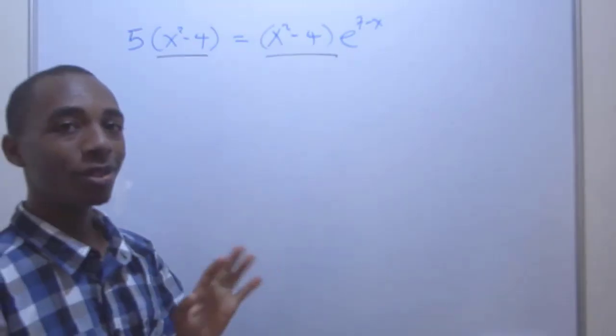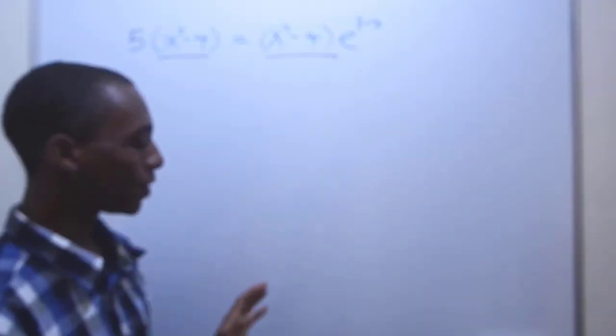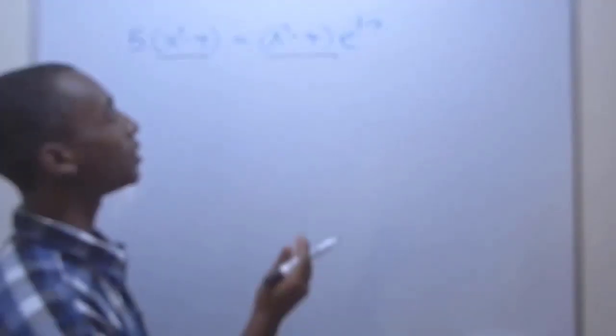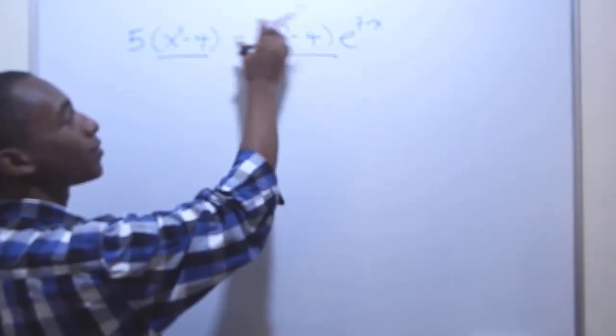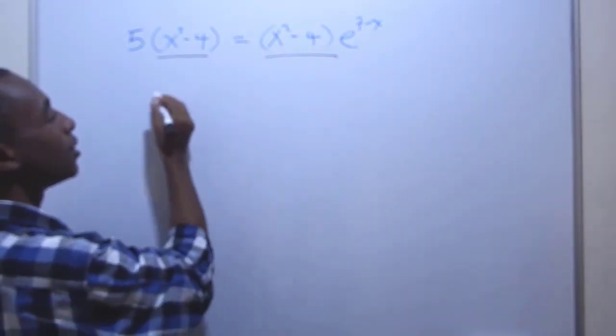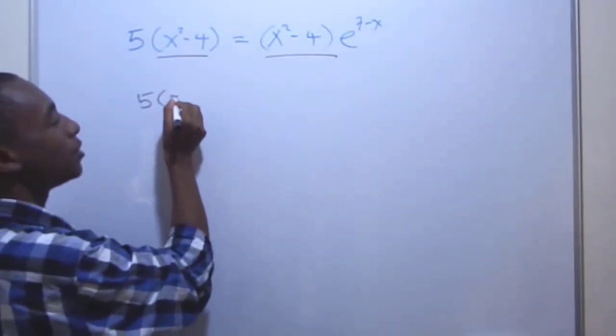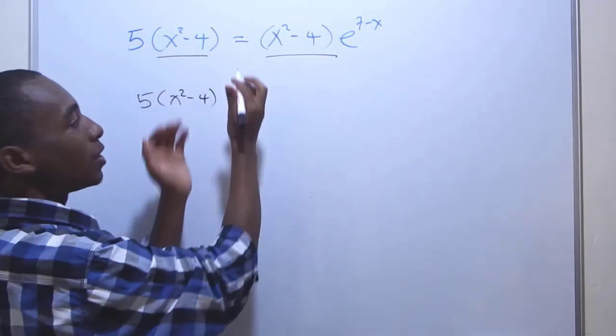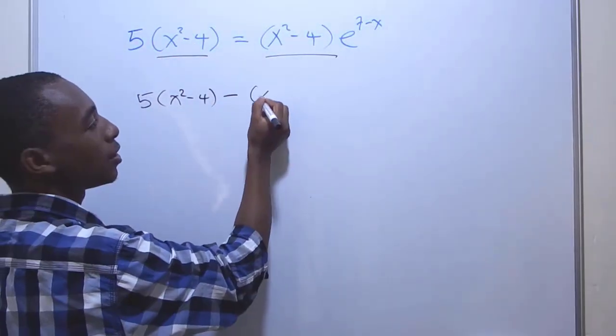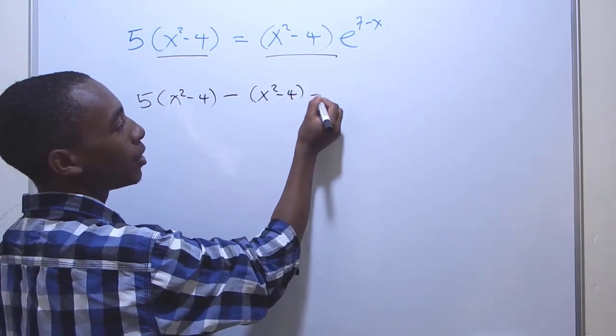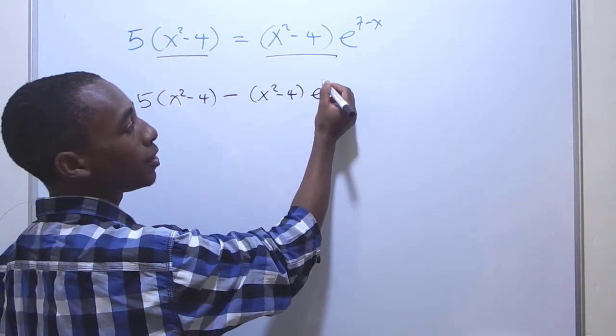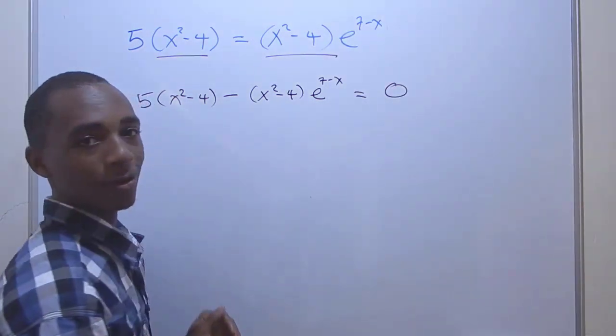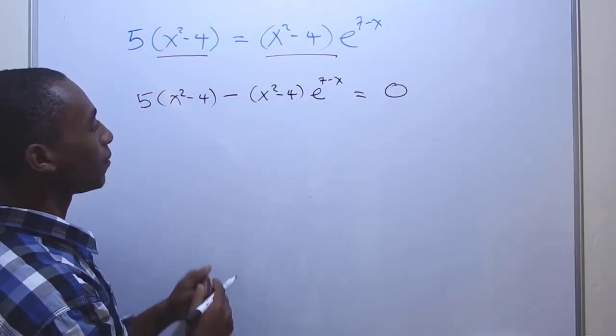you'll have actually eliminated two roots already from this equation. So you wouldn't want to do that. What I'm going to do instead is bring this to the left hand side. So write this as 5(x² - 4) minus (x² - 4)e^(7-x) equals zero on the right hand side.